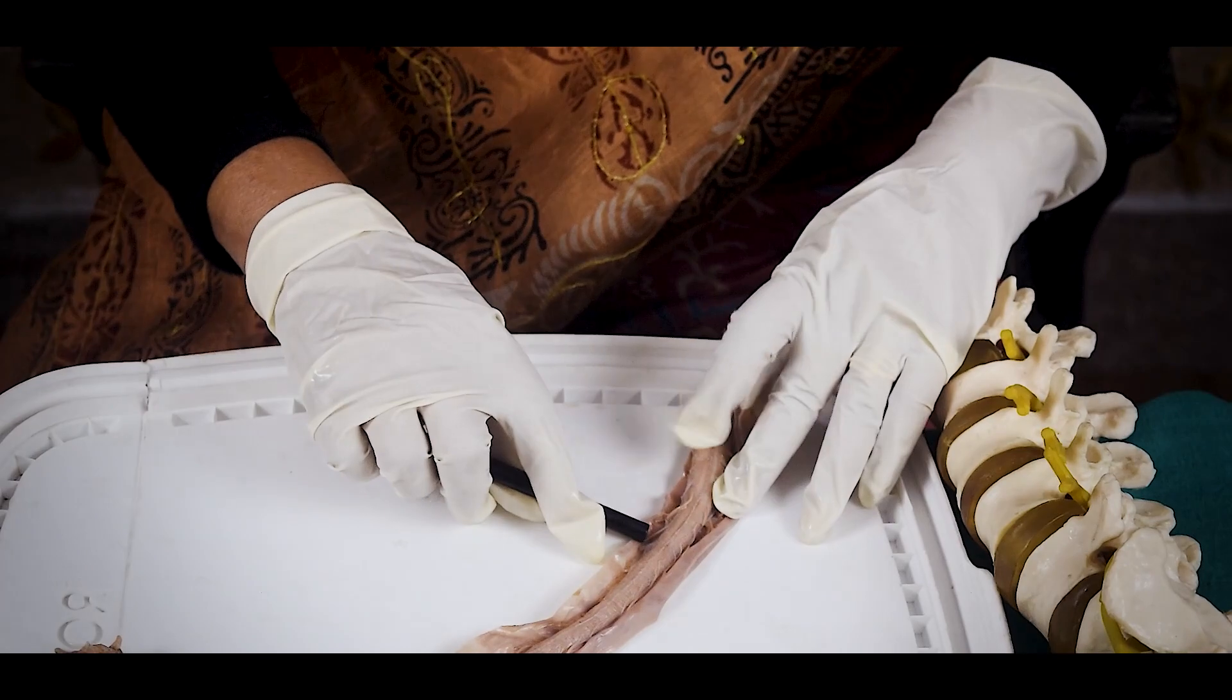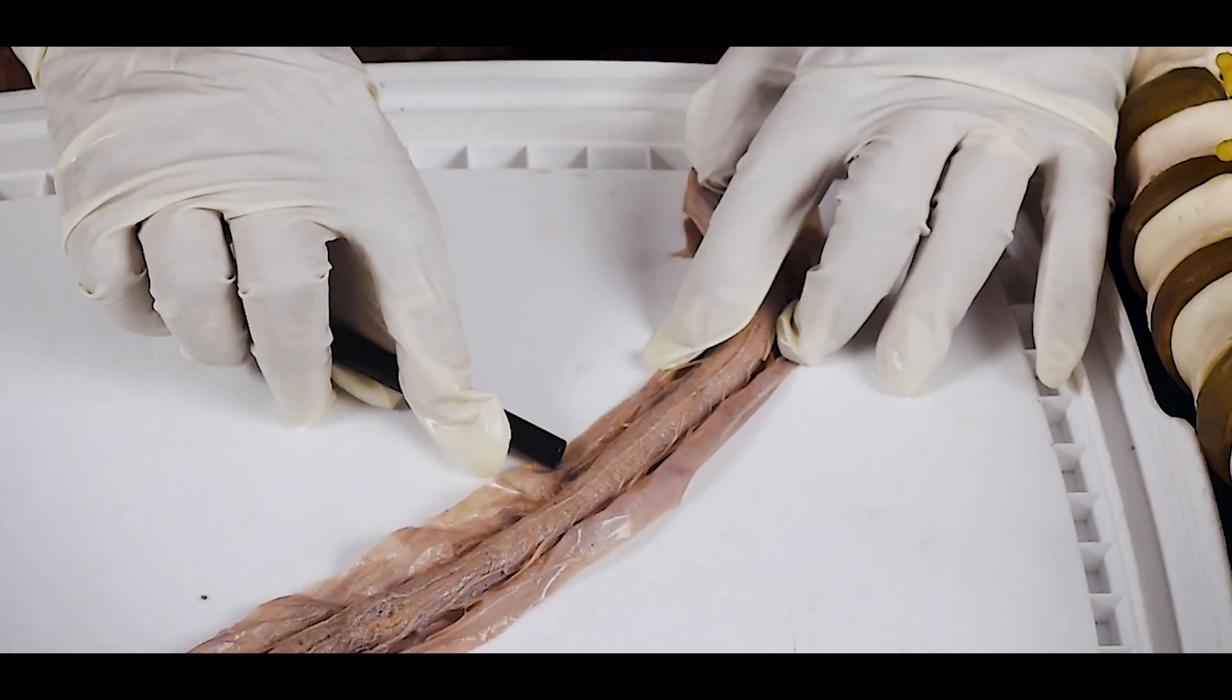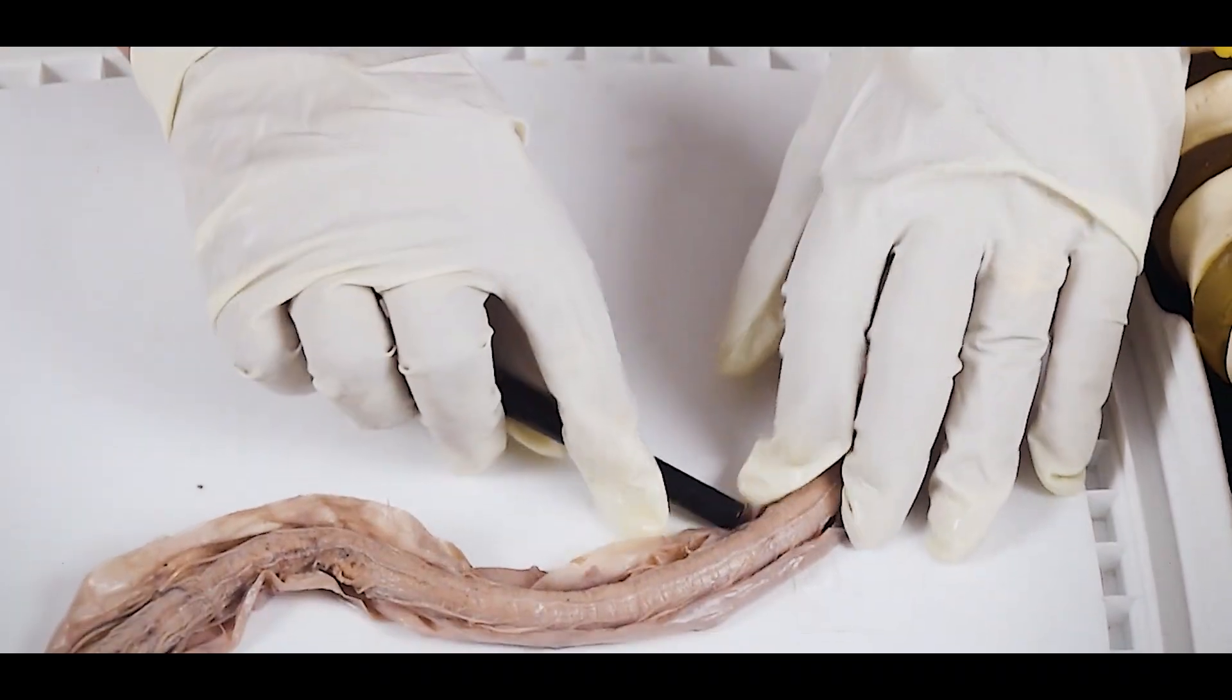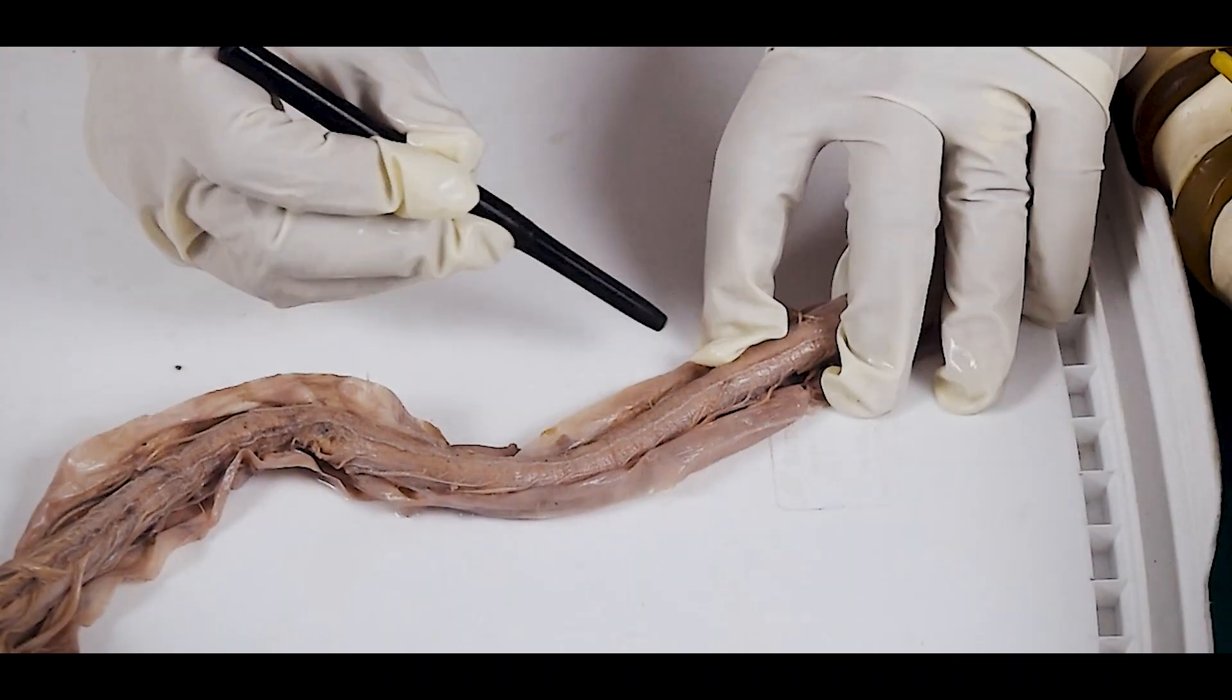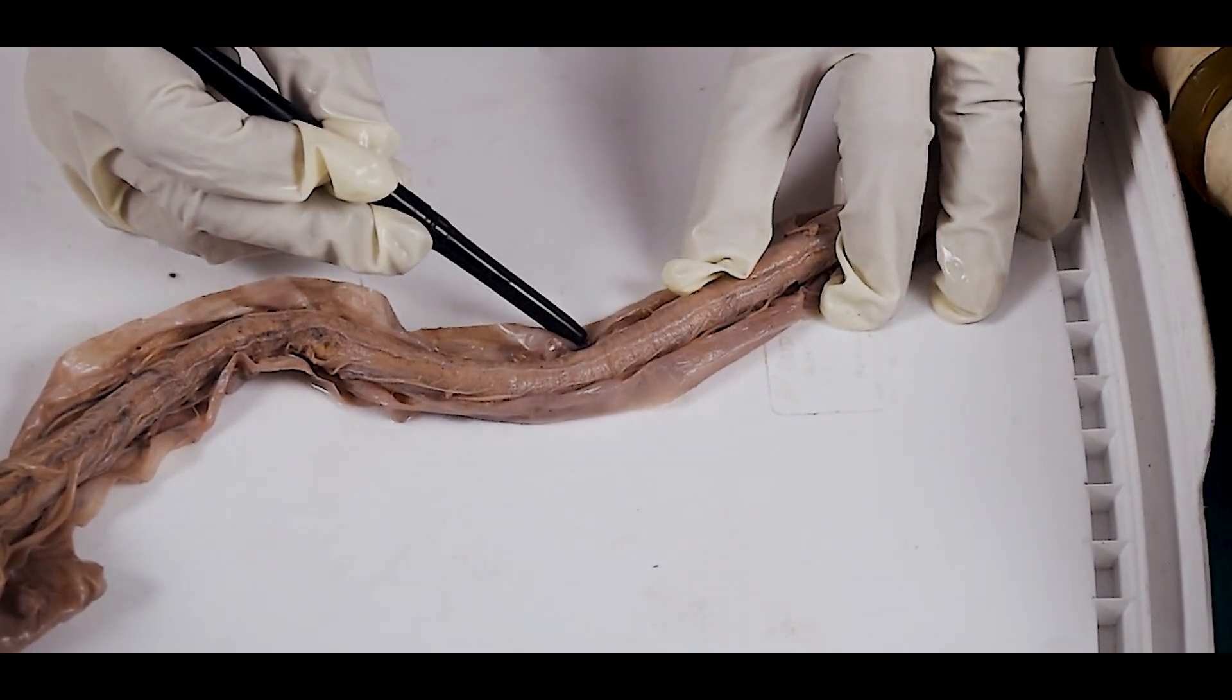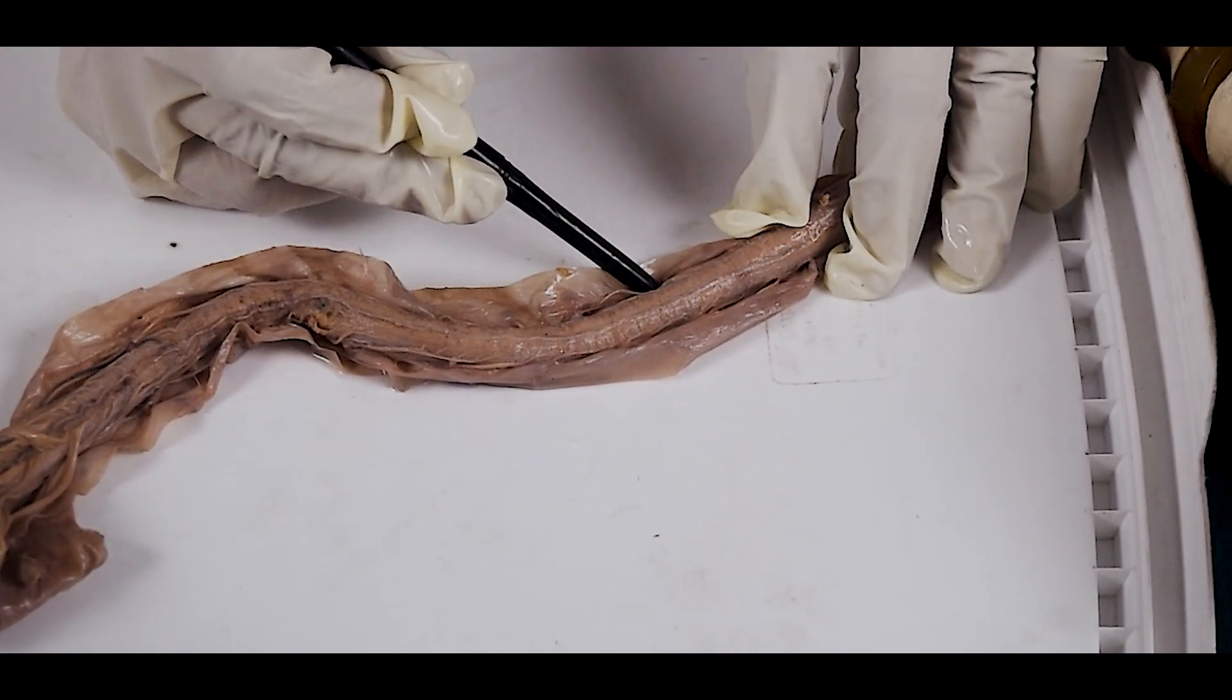And you will see the pia mater—it forms a ligament and this ligament is known as the ligamentum denticulatum. By this small ligament, they are attached with the dura mater and you will see the rootlets of the nerves coming out.